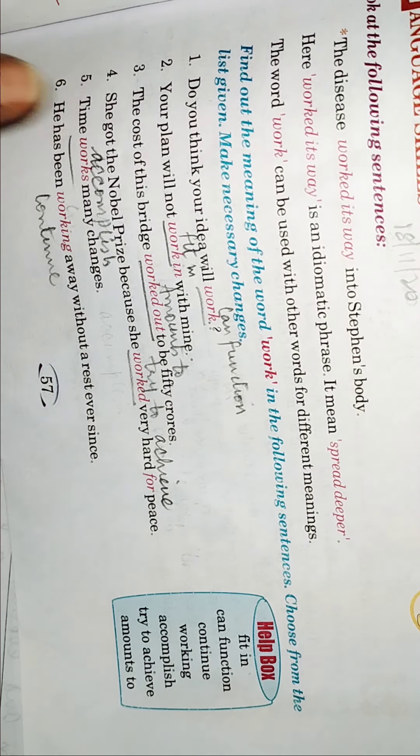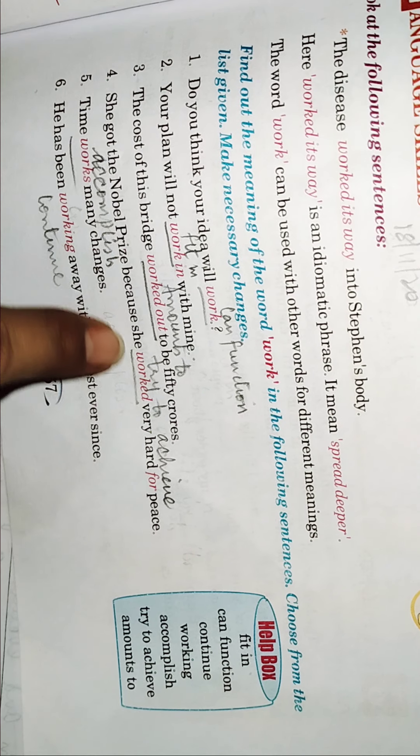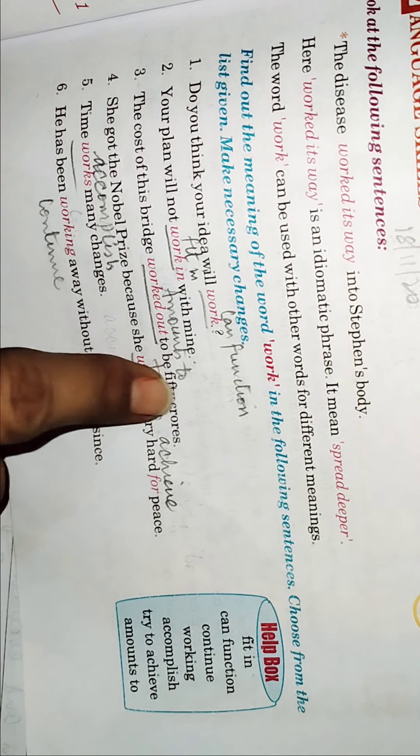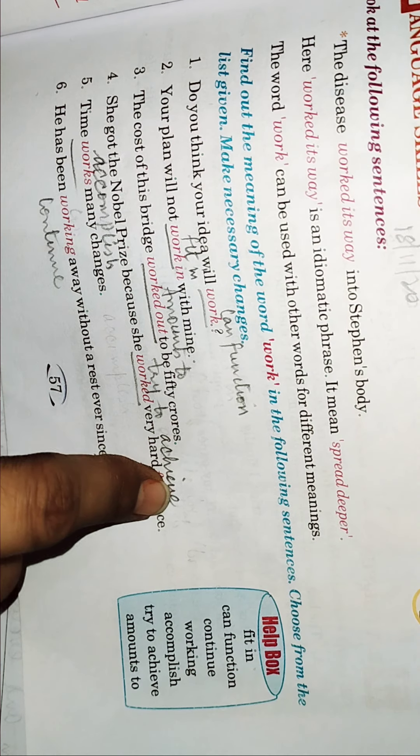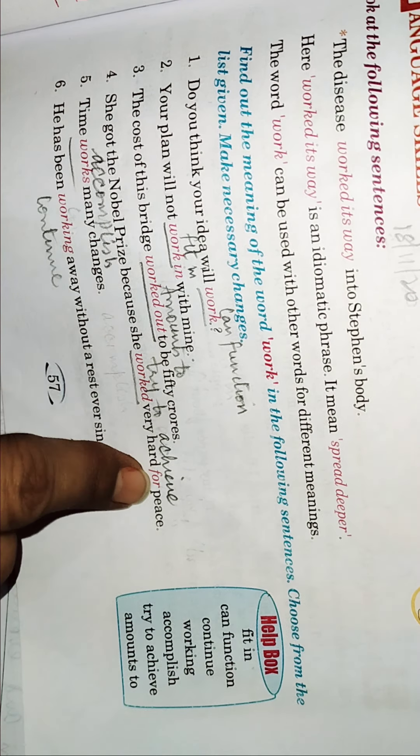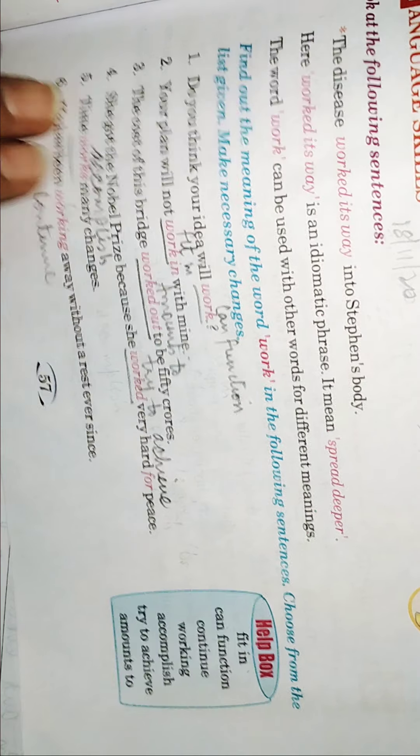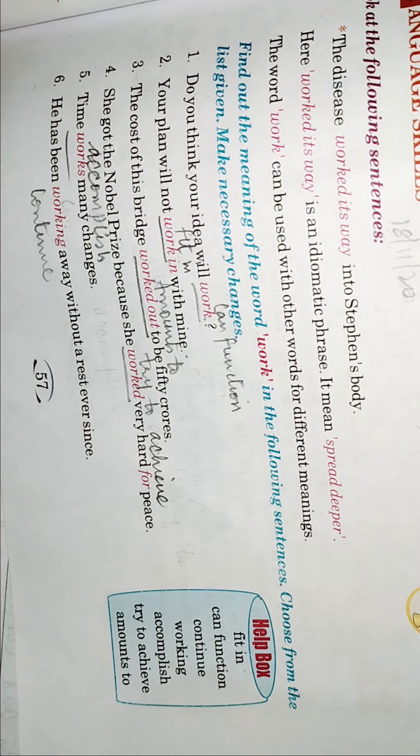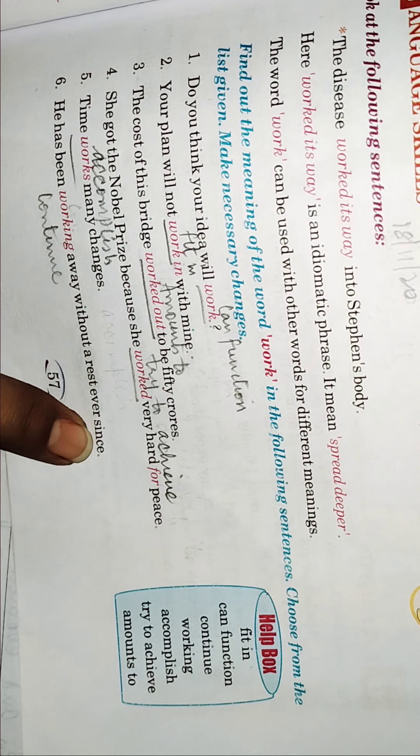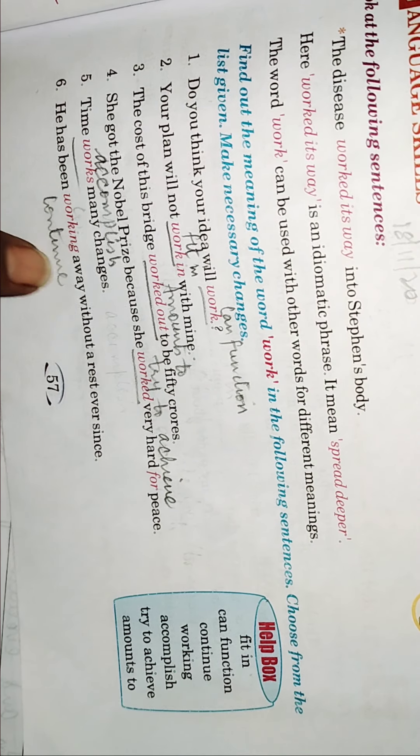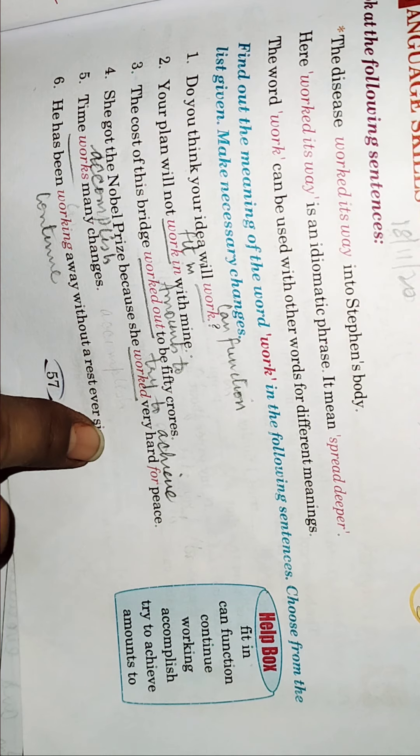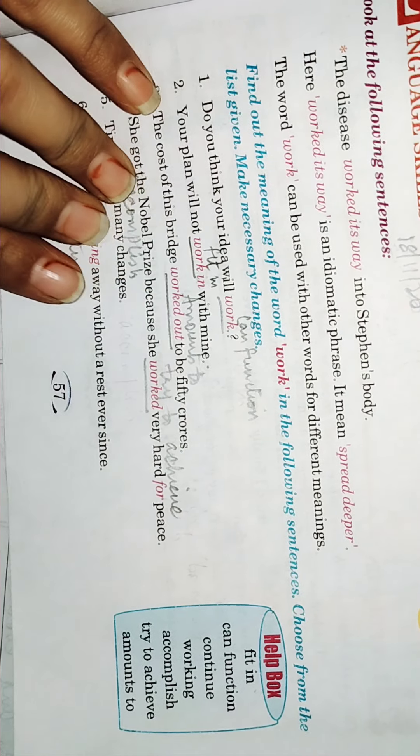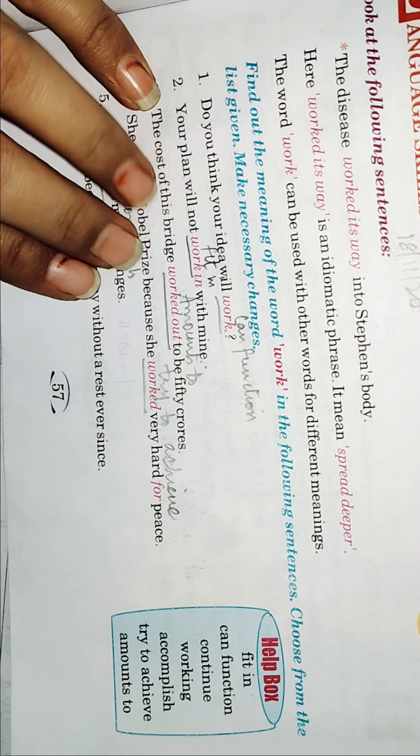She got the Nobel Prize because she worked very hard for peace. Means he tried to achieve. Here worked for means try to achieve. Time works many changes means here it means accomplish. He has been working away without rest ever since. Means he has been continuing without ever rest. So, here the word work has different meanings and I have explained to you.